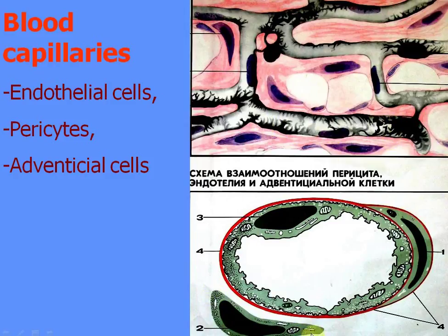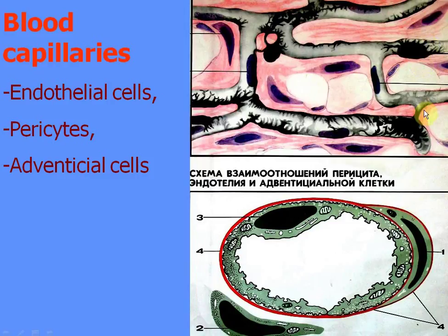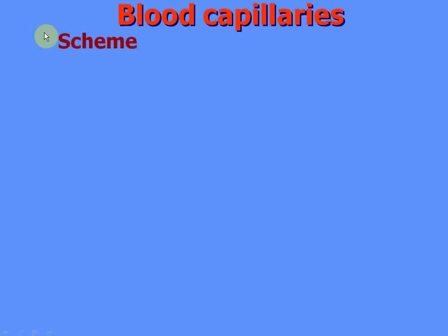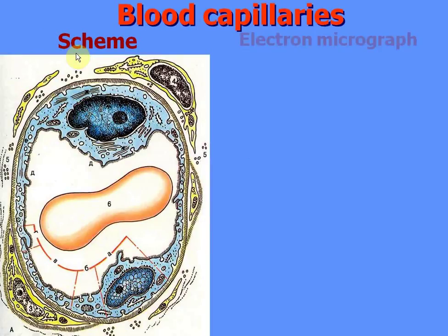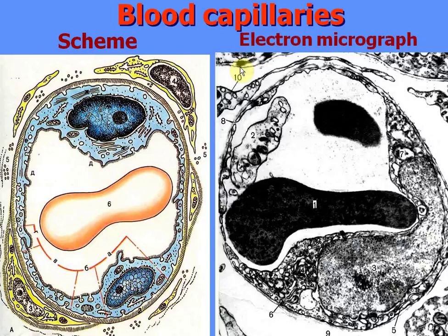From the outer membrane there are adventitial cells — spindle-like undifferentiated cells located along the capillaries. So endothelial cells, the nucleus, pericytes, and adventitial cells make up the wall of blood capillaries. A scheme and electron micrograph demonstrate these components.